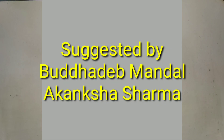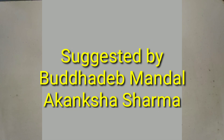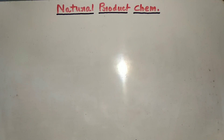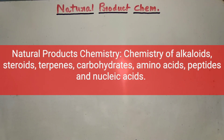Hey guys, I am Gautam from IIT Kharagpur and welcome to EG Chemics. In this video, I am going to talk about one important chapter from organic chemistry, that is natural product chemistry. And from this chapter, I will give at least 3 to 4 marks in the IIT exam. The main topics are the chemistry of alkaloids, steroids, tarpenes, carbohydrates, amino acids, peptides, and nucleic acids.